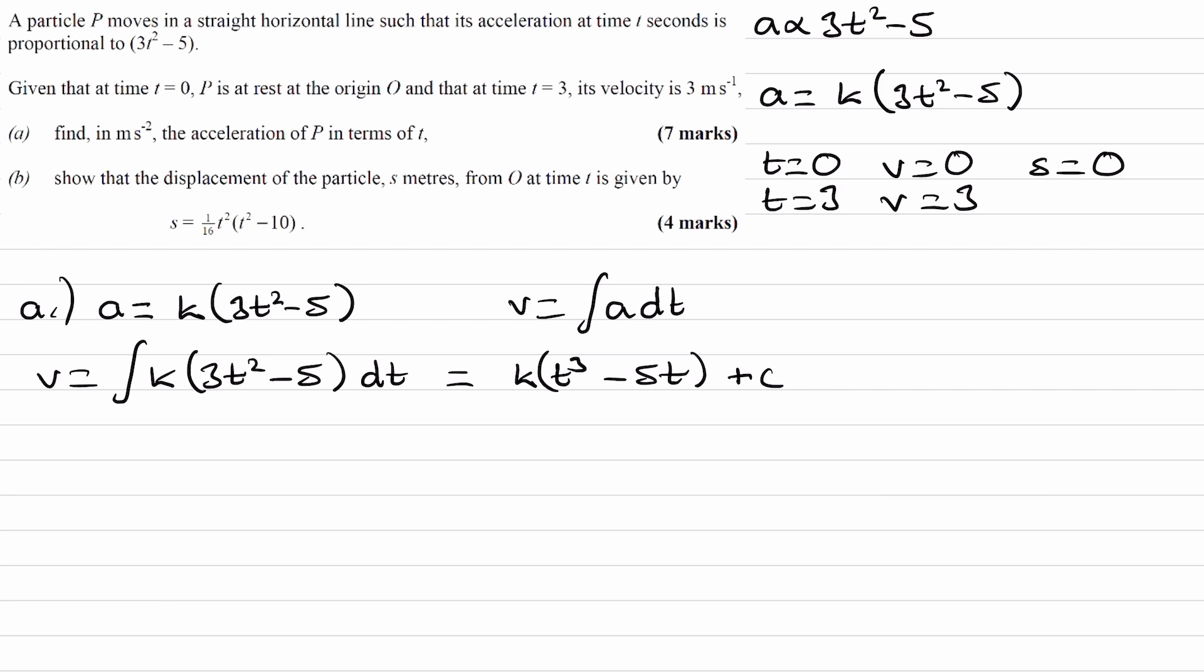Okay, so then we can put in these things here. Let me write out my equation first. So v is now equal to kt cubed minus 5t plus c. So we can put in t is 0 when v is 0. We end up with 0 is equal to k multiplied by 0 minus 0. These two terms are 0, and then plus c. And that will mean that c is 0.